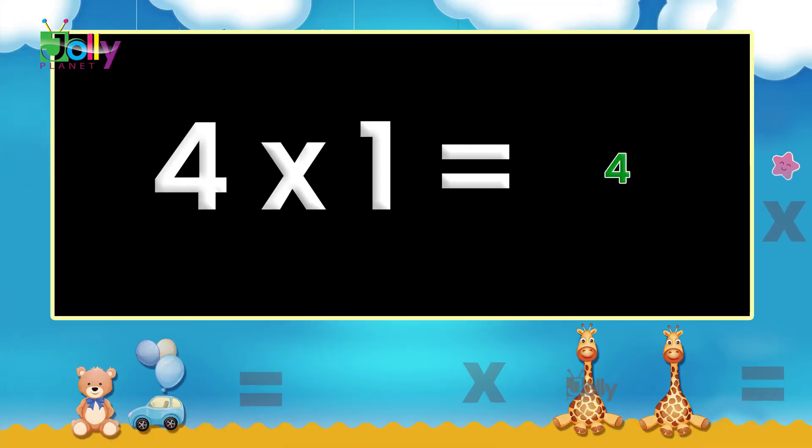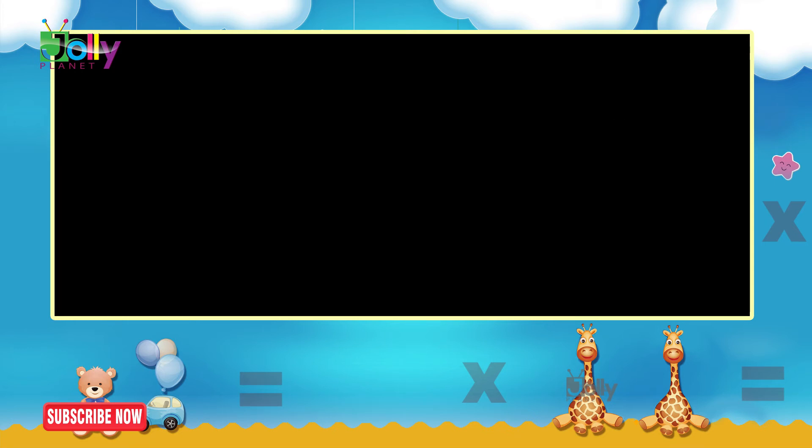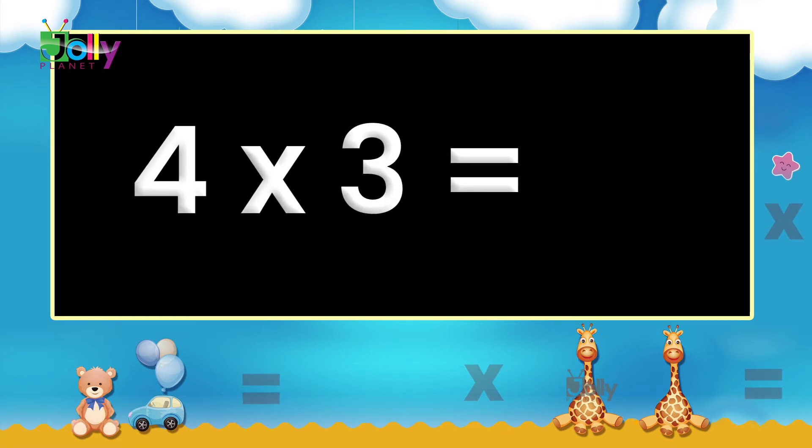Four ones are four. Four twos are eight. Four threes are twelve.